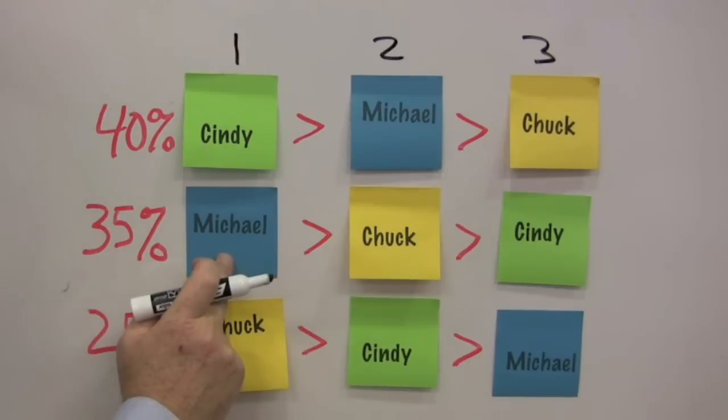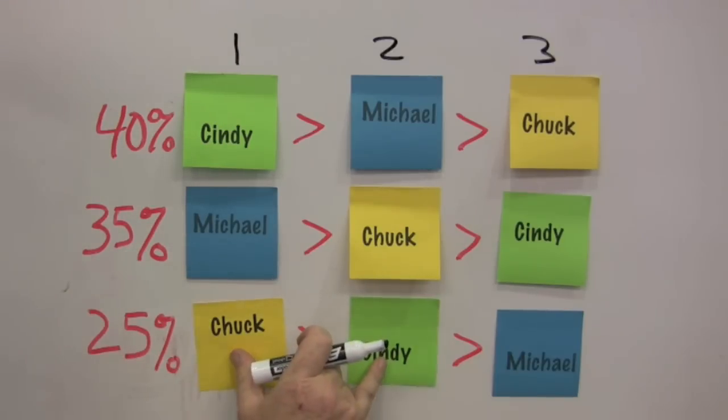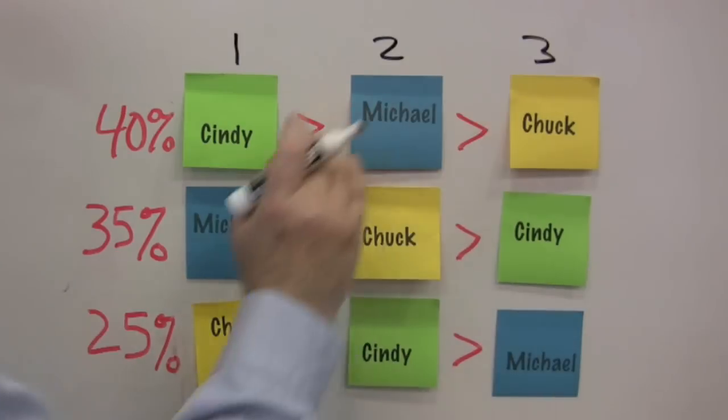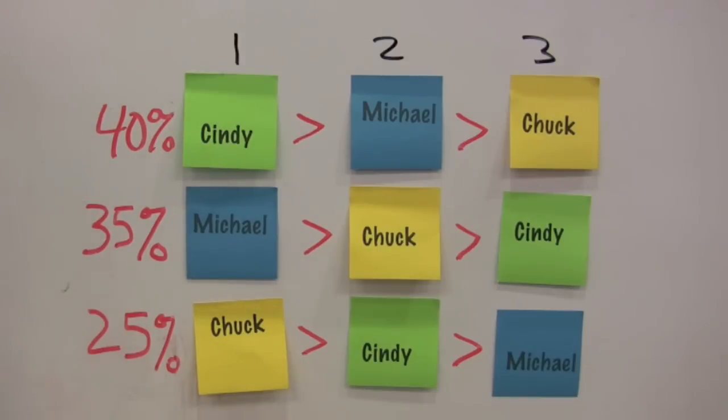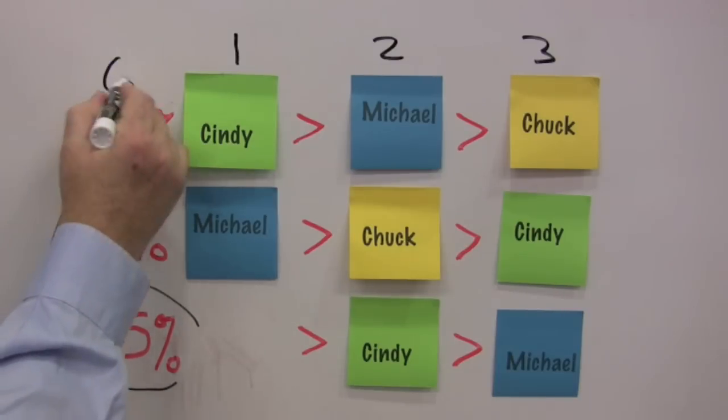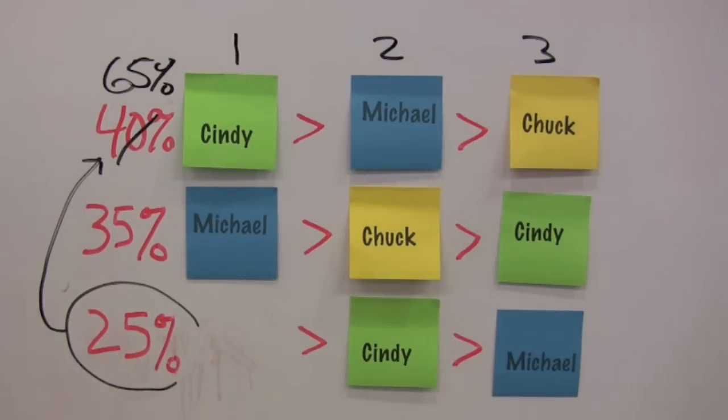Using instant runoff voting, you take a look at who has first, second, and third, and go to the candidate that has the lowest number of first votes. In this case, it would be Chuck. You take off his and go to the second place. In this case, all of his votes, or 25%, would then go to Cindy, who gives her now 65% of the vote. So much for the spoiler effect. 60% of the residents chose Chuck over Cindy. 40% chose Cindy over Chuck. Cindy wins the election using instant runoff voting.